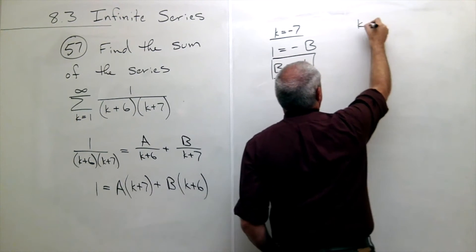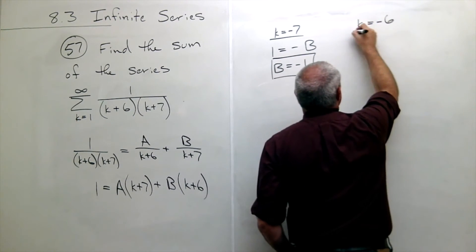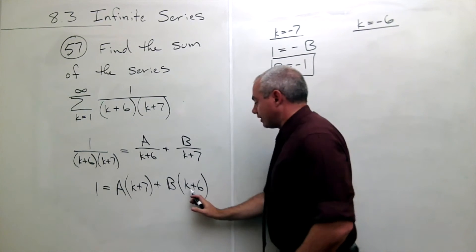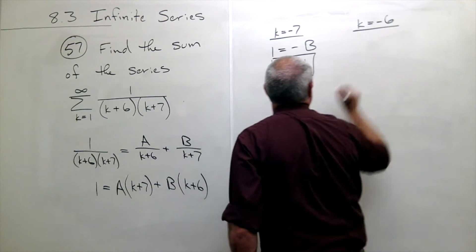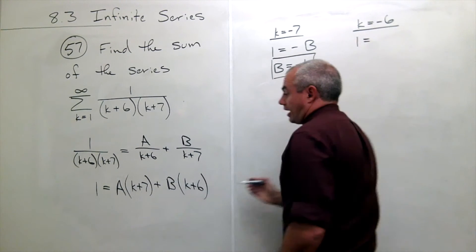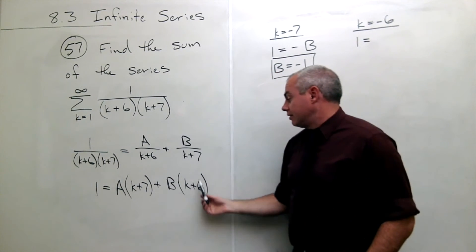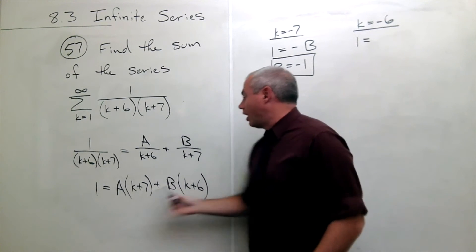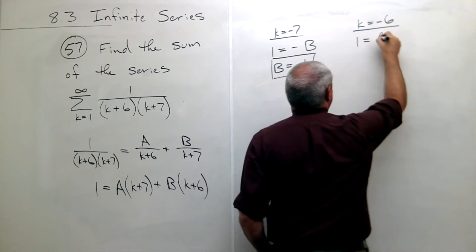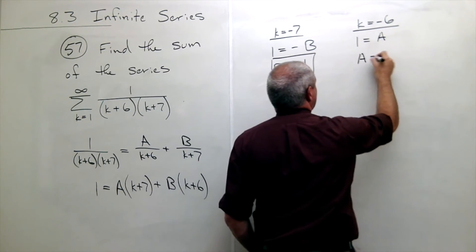And then I can make the choice that k is equal to negative 6. If I let k equal negative 6, then on the left side I still have 1 and on the right side this term now goes away and I get A times 1. In other words I just get A. So A equals 1.